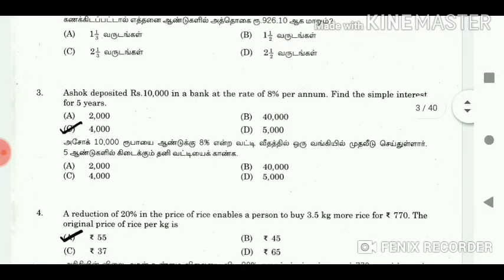3. Asok deposited Rs. 10,000 in a bank at the rate of 8% per annum. Find the simple interest for 5 years. Answer: 4000.